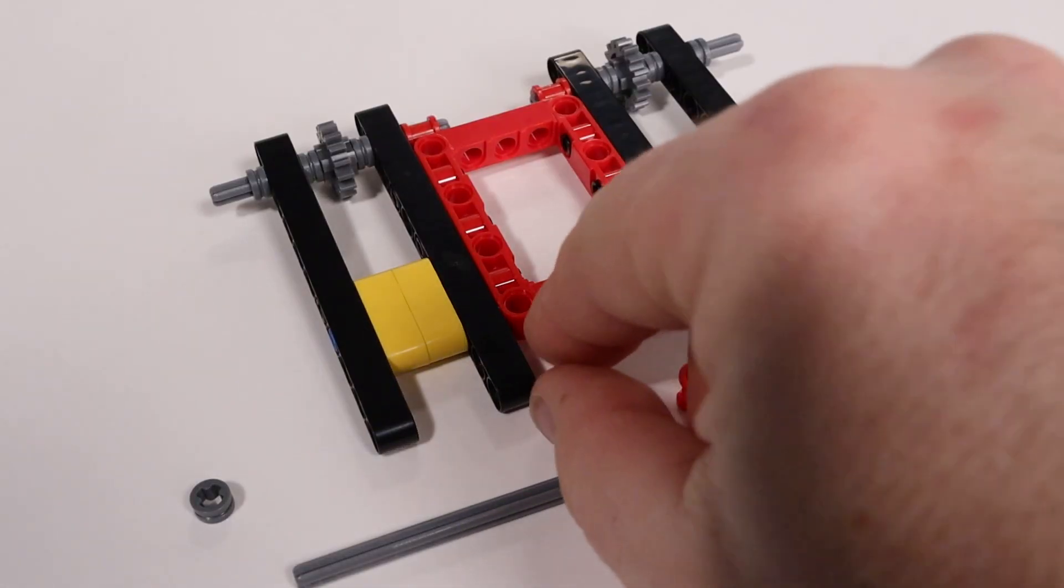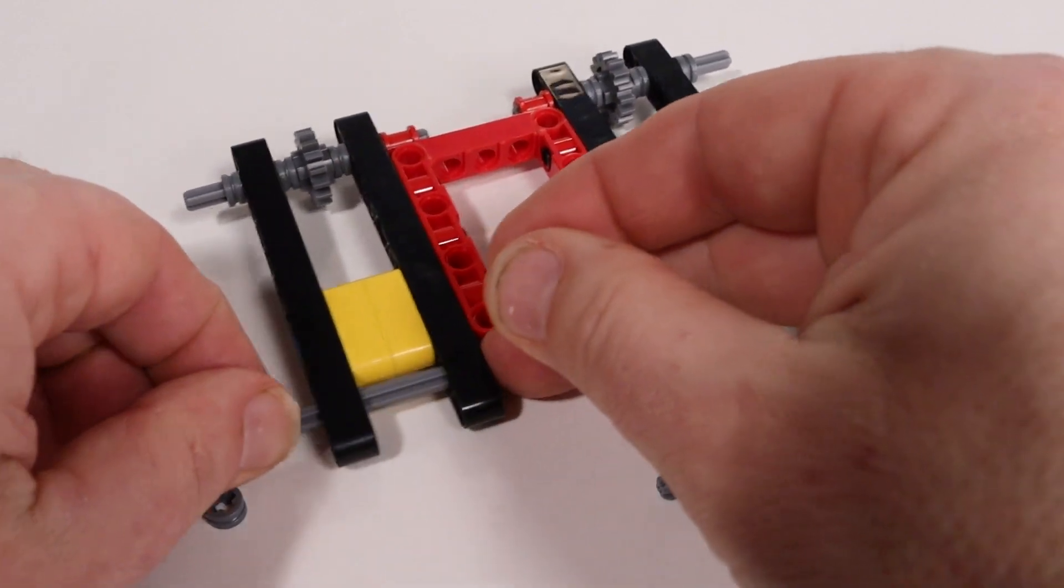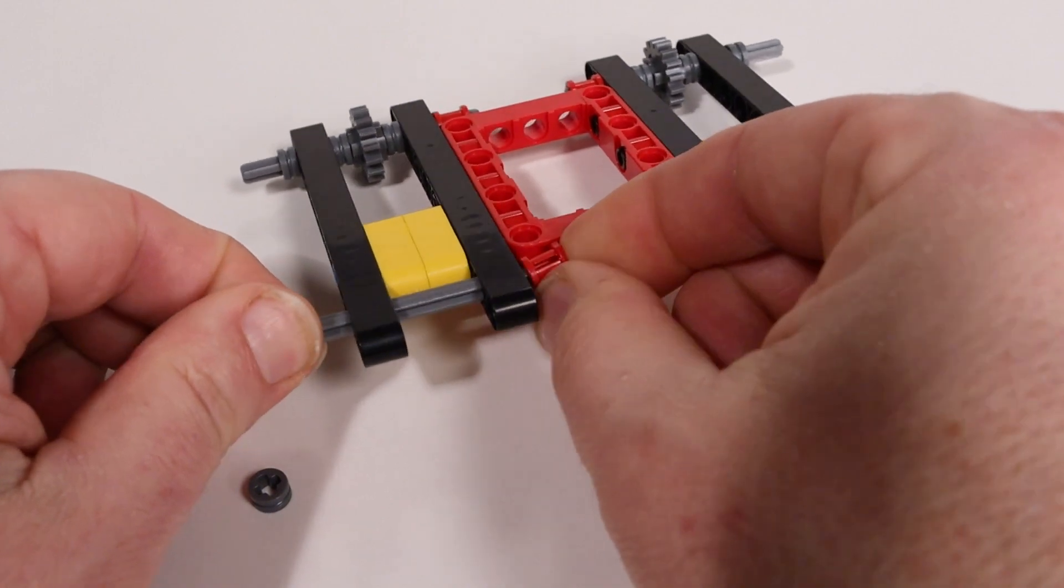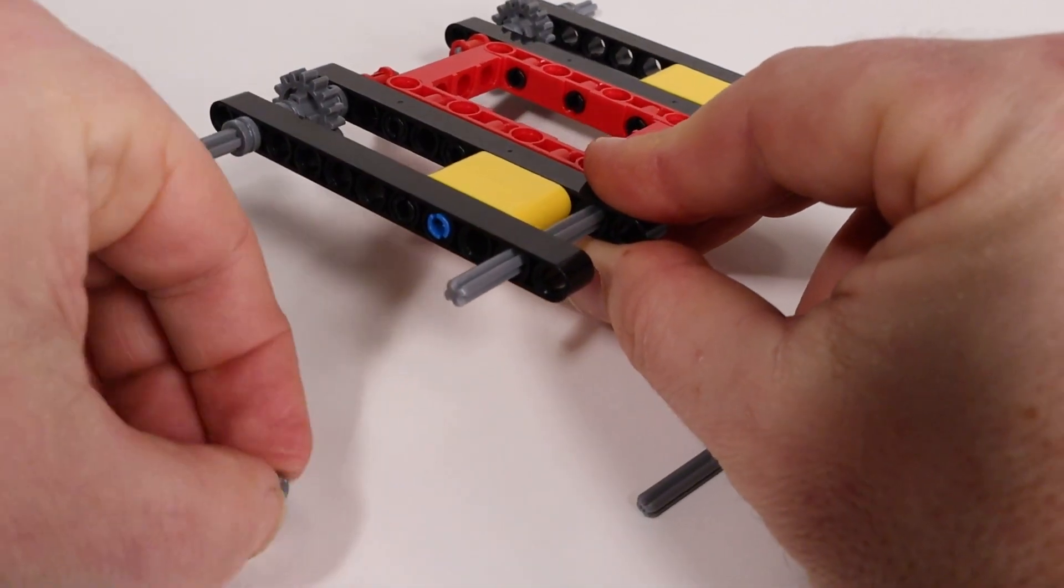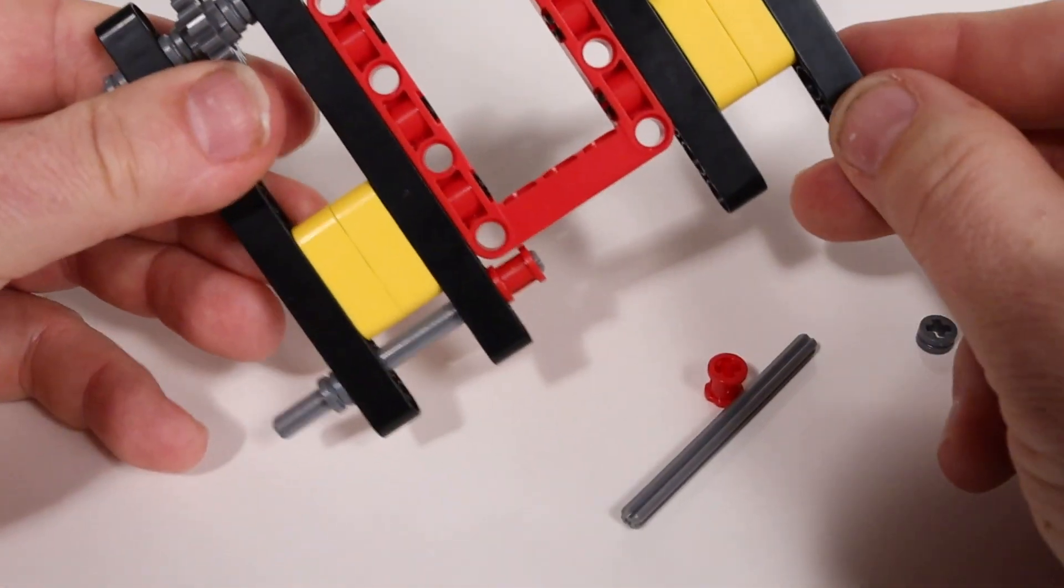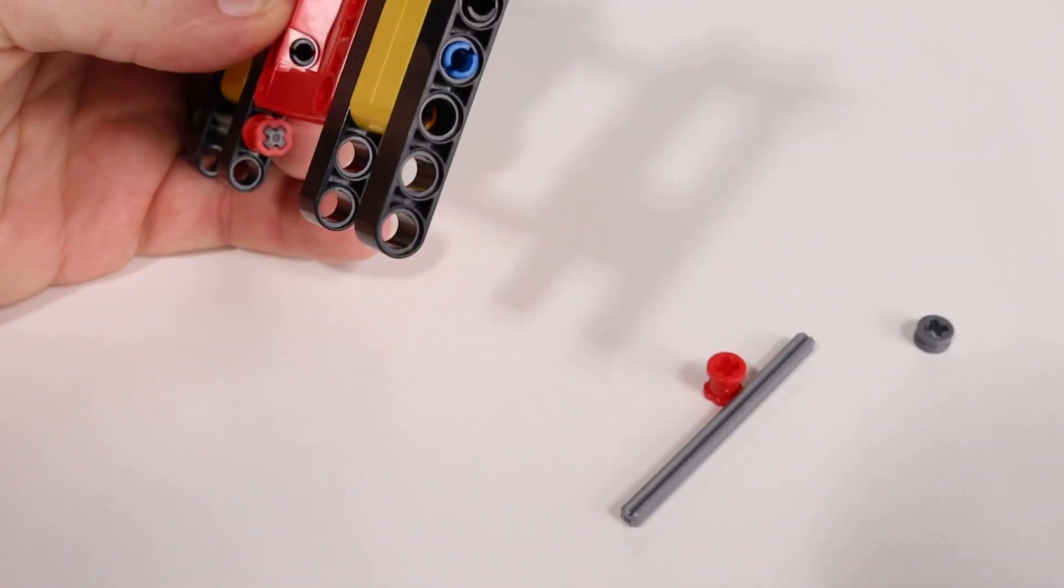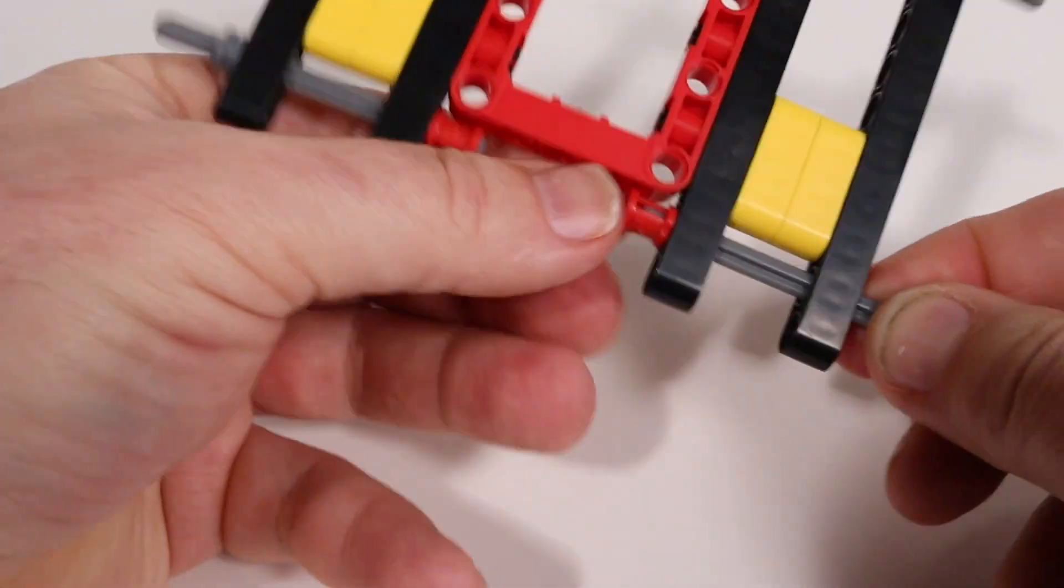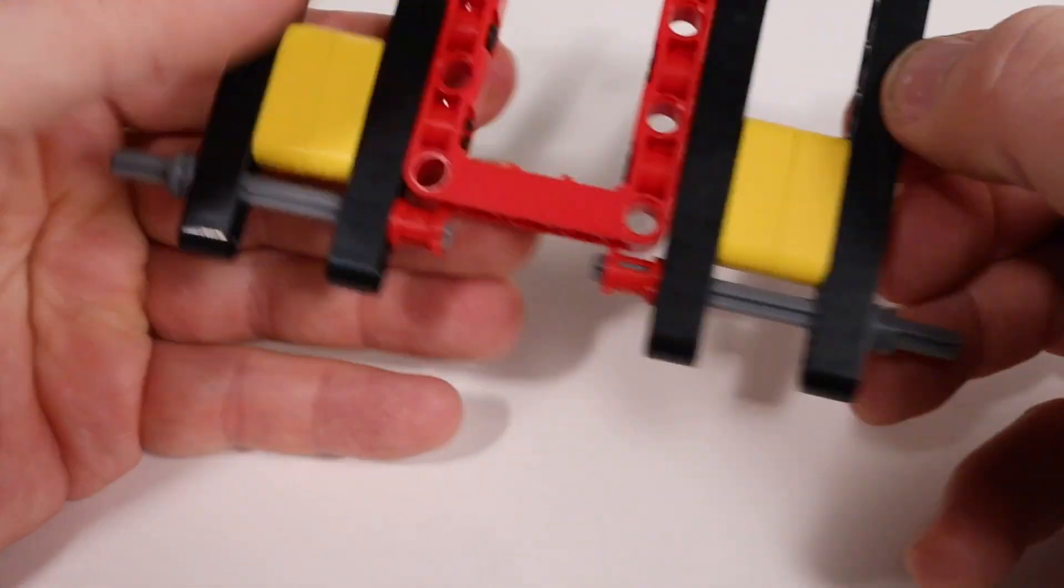Now we'll add the rear axles. Take an axle and slide it through the second hole from the end of the beams and place a red full-size bushing on the inside. Slide a gray half-size bushing on the outside. Then do the same on the second part. Sliding the axle through the second hole in from the end. Adding a red bushing to the inside and a gray half bushing to the outside.